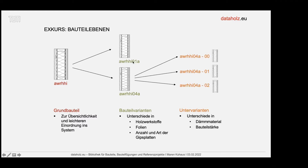Da gibt es Bauteil-Varianten: die obere Variante hat noch Folien als dampfdiffusionsregulierende Schicht und als Winddichtheitsebene, die untere Variante könnte man als folienarm bezeichnen. Es gibt Unterschiede bei den Bauteil-Varianten in Holzwerkstoffe, Folien und zum Beispiel auch Anzahl der Gipskartonplatten für eine K260-Ausführung. Bei den Untervarianten kann man dann das Dämmmaterial wählen: Mineralwolle, Zellulose- und Holzfaserdämmstoffe in unterschiedlichen Dämmstärken.